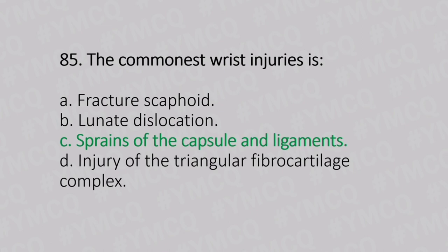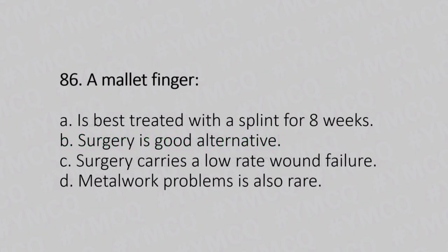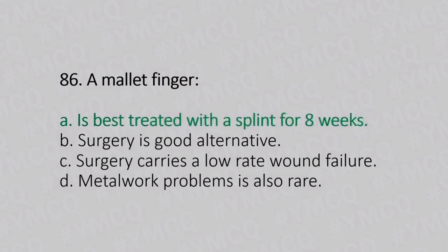Now let's move to question number 86. A mallet finger. Option A: is best treated with a splint for 8 weeks. Option B: surgery is a good alternative. Option C: surgery carries a low rate of wound failure. Option D: metal work problem is also rare. And the answer is Option A, is best treated with a splint for 8 weeks.